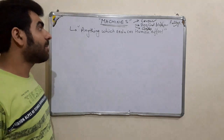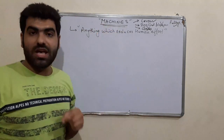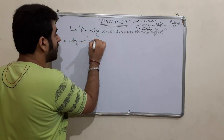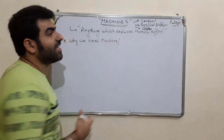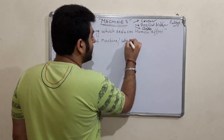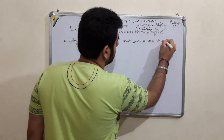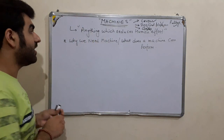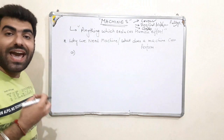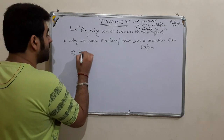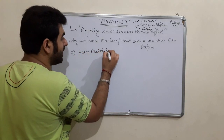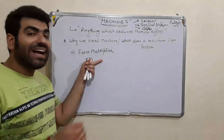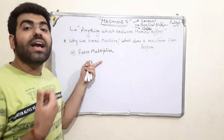Now why do we need machines? What can a machine perform? The first feature is that a machine can act as a force multiplier. What this means is that the effort applied by us will be less, and that less effort is capable of picking up a heavier load.